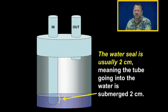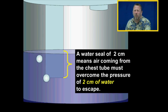The water seal is usually two centimeters, meaning the tube going into the water is submerged under two centimeters. A water seal of two centimeters means that air coming from the chest tube must overcome the pressure of two centimeters of water to escape.